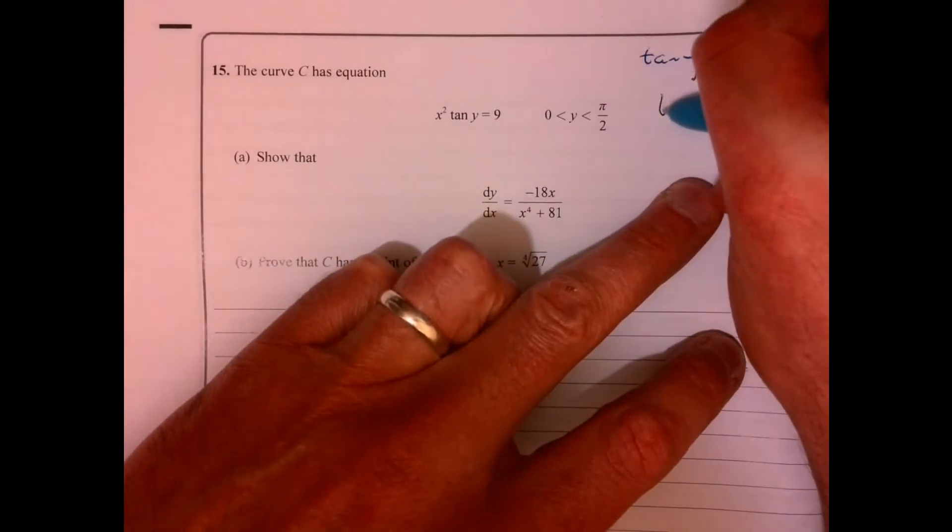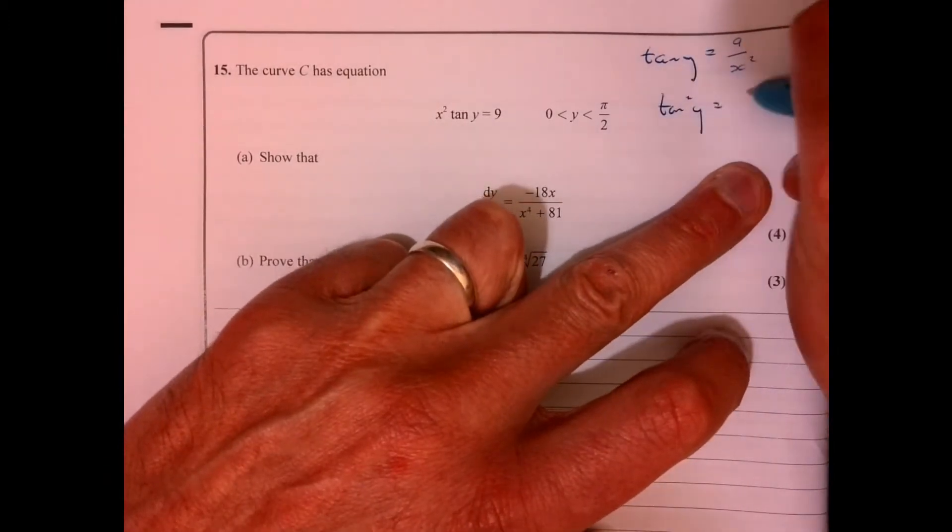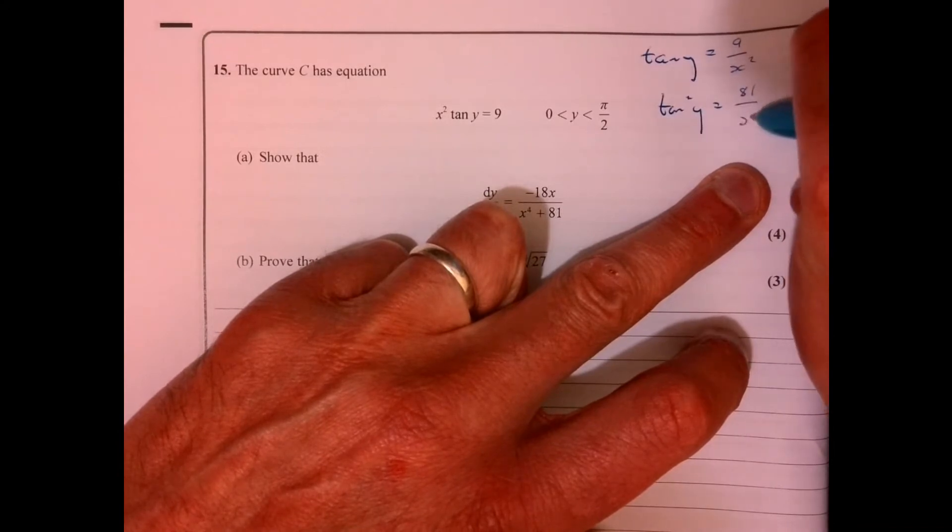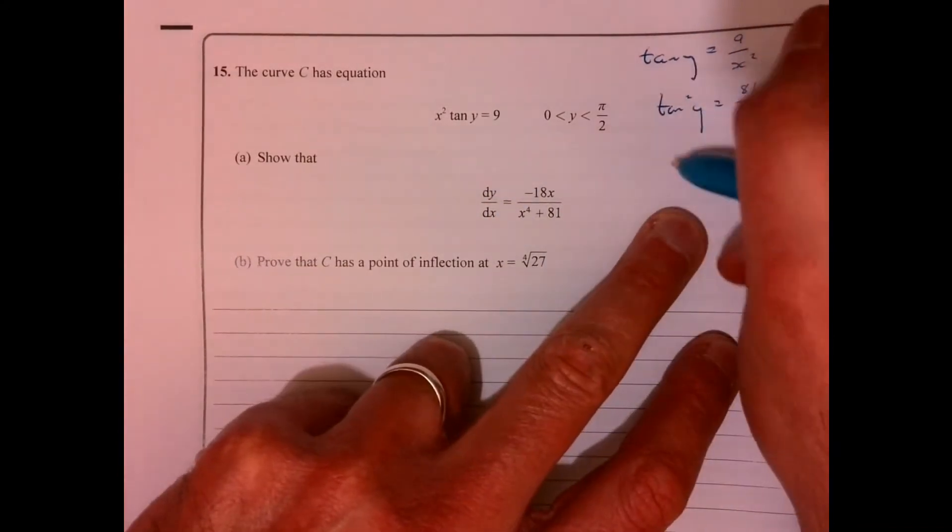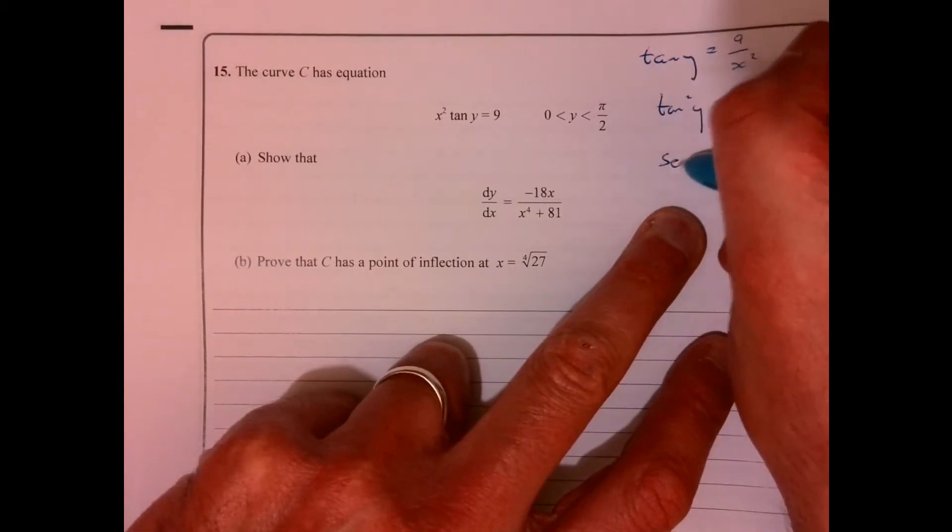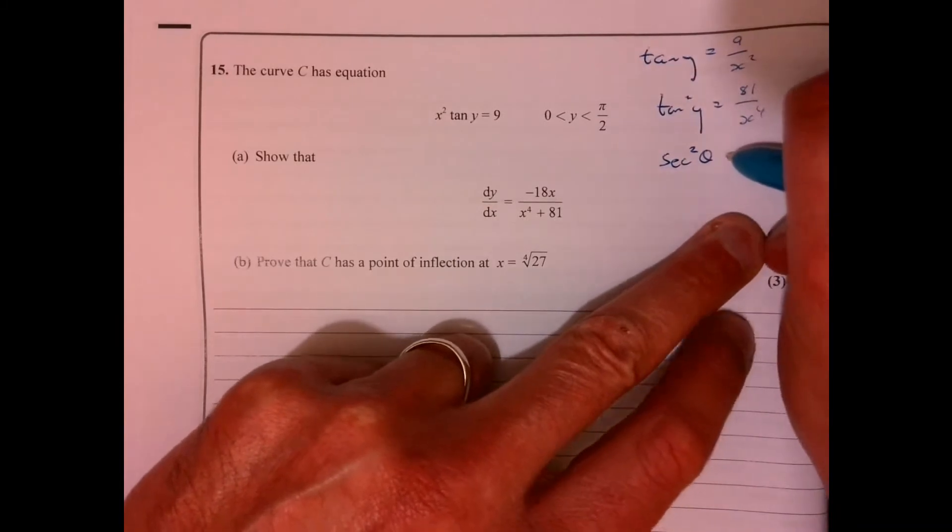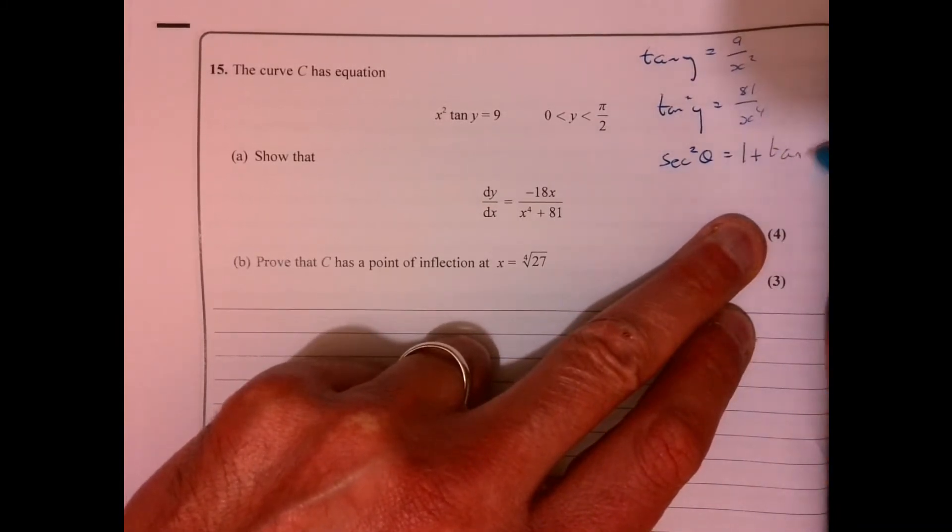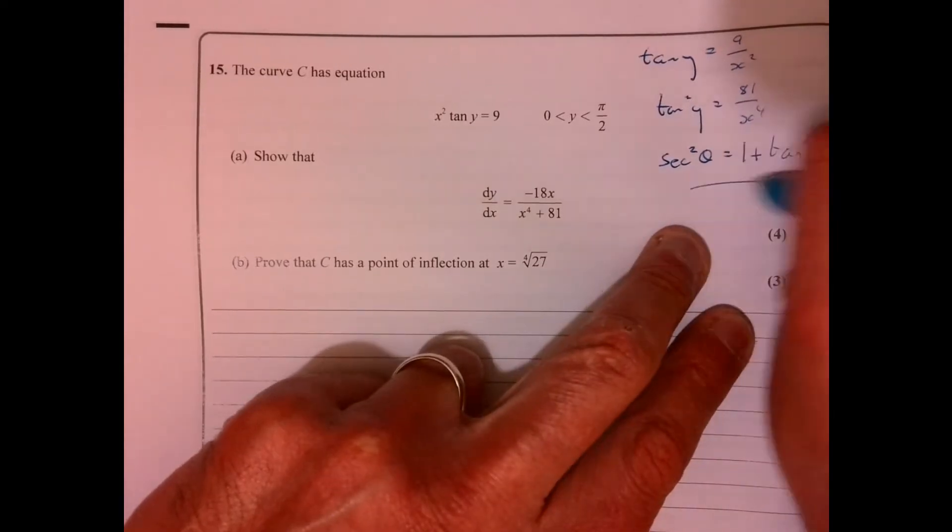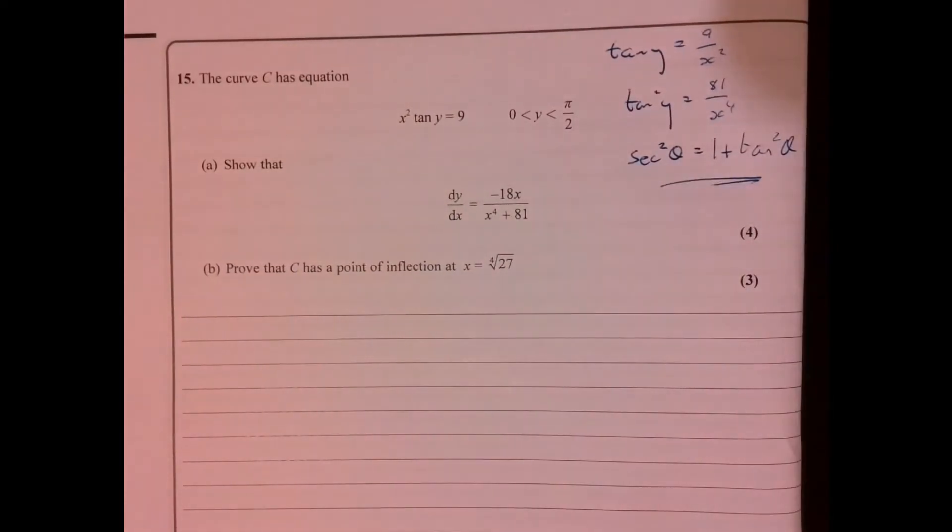Something else that might be useful. What about tan squared y? Well, you might think, why is that going to be useful at the moment? Something else that we're going to need along the line, just to remind you about, is sec squared theta is 1 plus tan squared theta. And that's going to come into it. I'm just going to write those there. We're going to use those as we go.